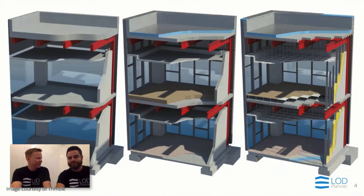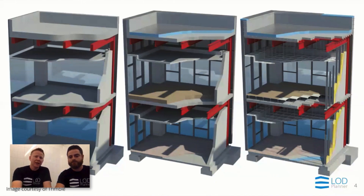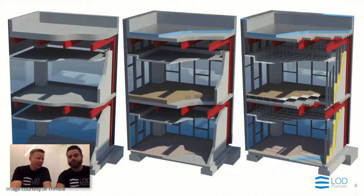Which BIM do we need? It's all about the use — what are you going to use the model for? If the model on the left-hand side was what we got, but we actually wanted the model on the right-hand side, we would not have enough. There would be gaps and we wouldn't be able to do what we needed to do. And vice versa — if it was the other way around, we'd have way too much, and either way there is a lot of waste. When we do plan, we can cut out the waste, build a model fit for purpose, and drive the workflow to get value from it.